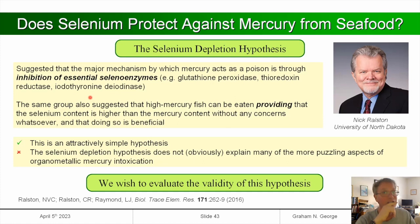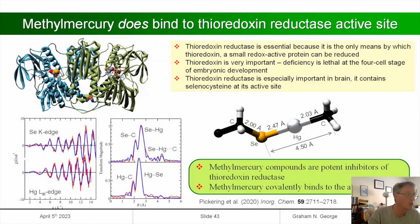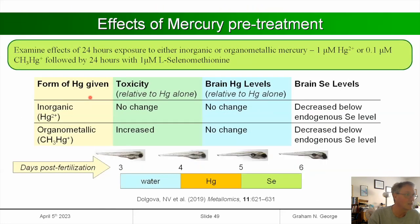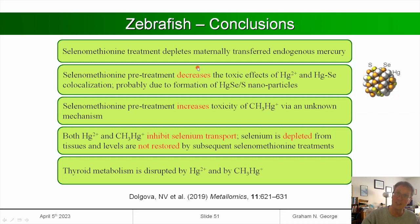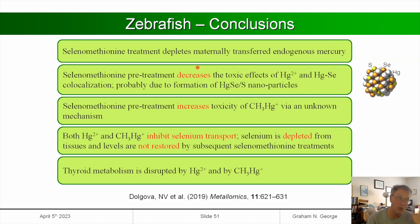X-ray fluorescence imaging studies show that sometimes selenium pre-administration protects against mercury toxicity and other times it magnifies it. Mercury inhibits selenium transport, selenium is depleted from tissues and is not restored by subsequent selenium supplementation, and mercury also disrupts selenium enzymes. So the suggestion that high selenium protects against high mercury may be only partly correct.